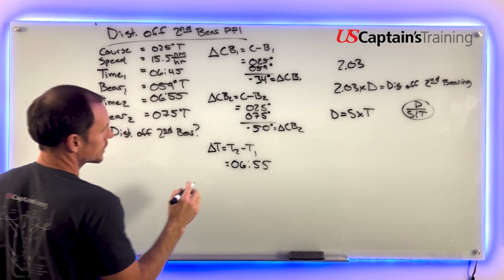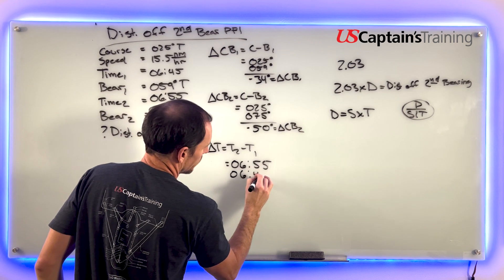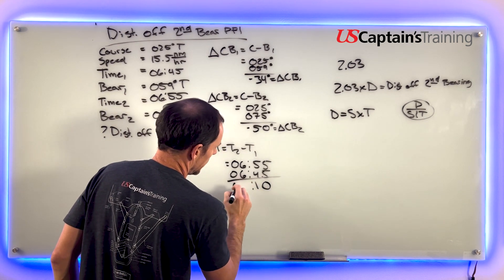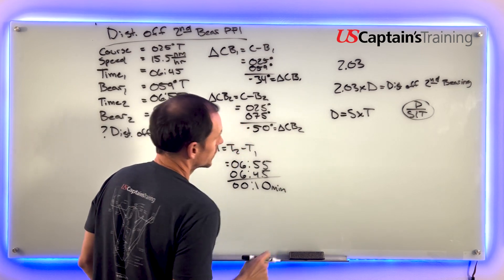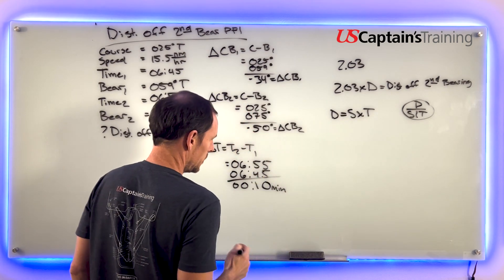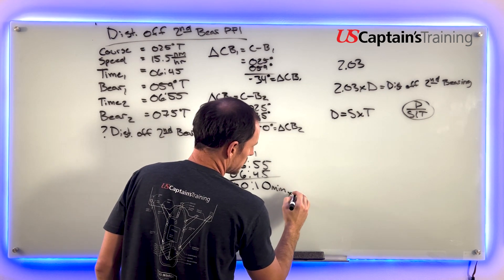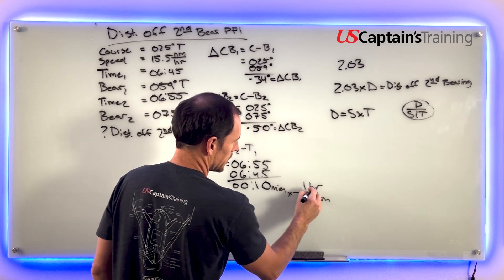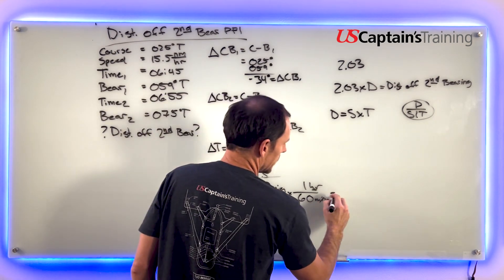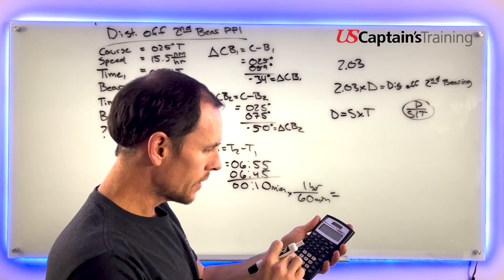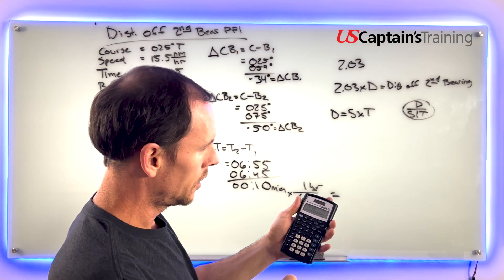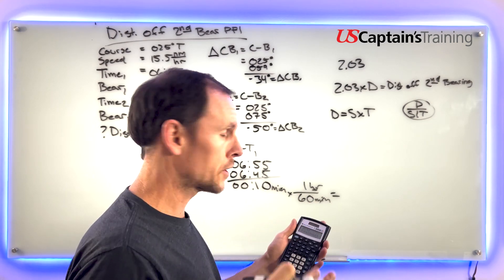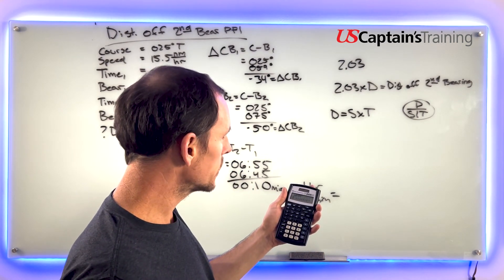Time one is 0645. 55 minus 45 equals 10 — so delta-T is 10 minutes. To use it here we need hours: 10 minutes times (1 hour / 60 minutes) = 10 divided by 60. That equals 0.16666..., which we round to three decimal places: 0.167 hours.